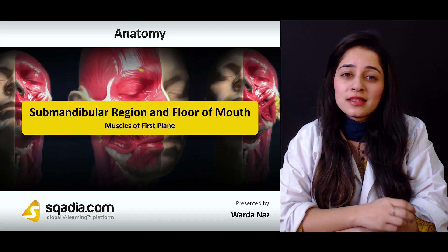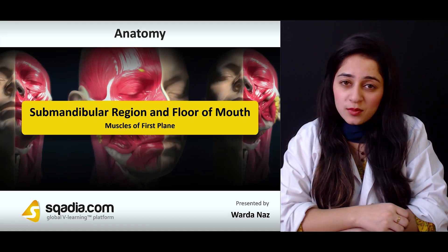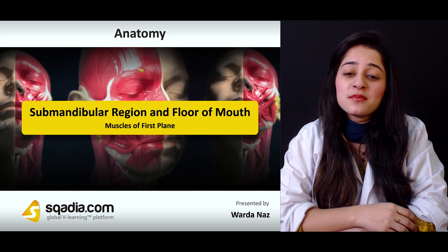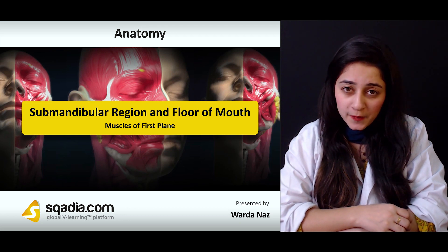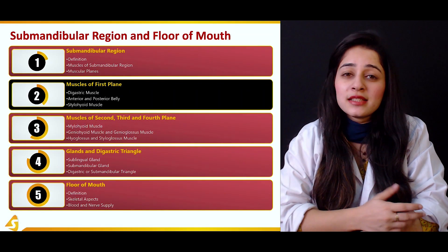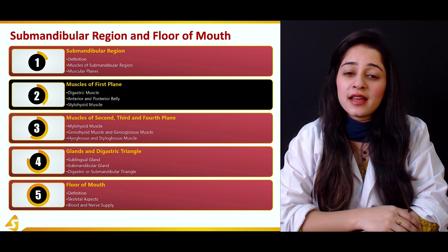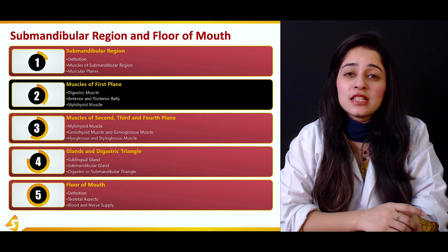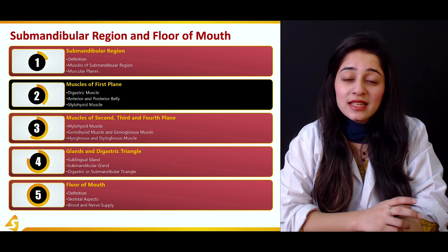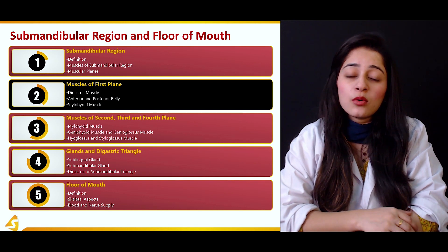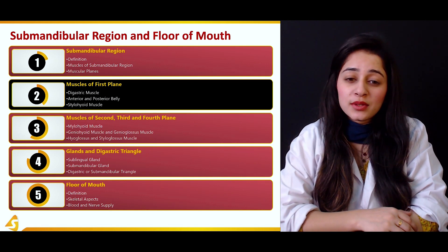The stylohyoid muscle and the digastric muscle are going to form the muscles of the first plane. In this section we'll be covering in detail the digastric muscle, including the anterior and posterior bellies, along with the stylohyoid muscle.